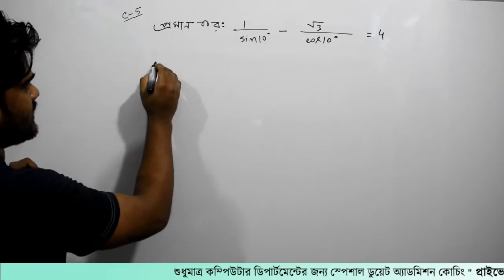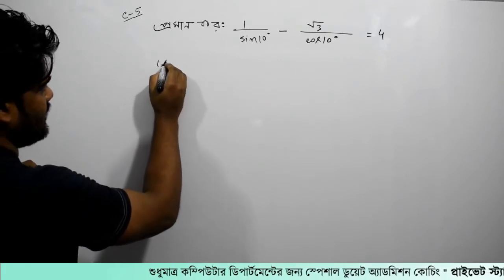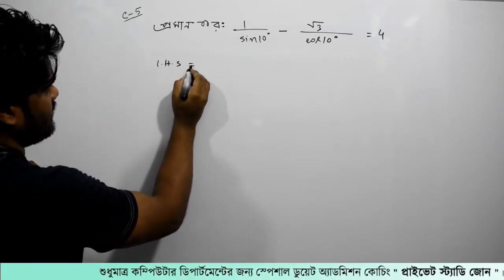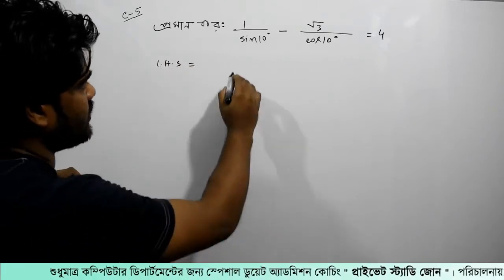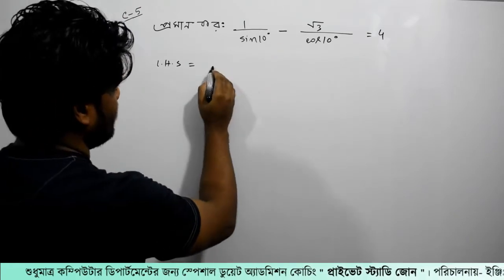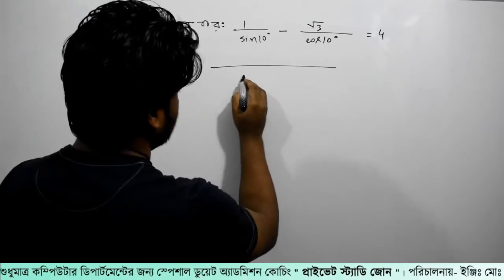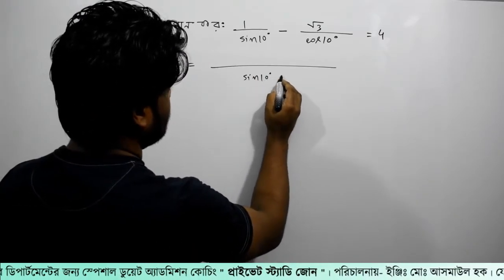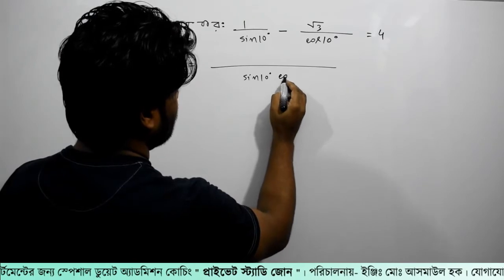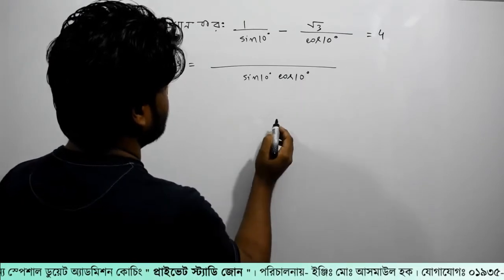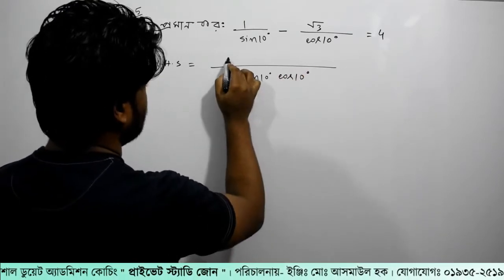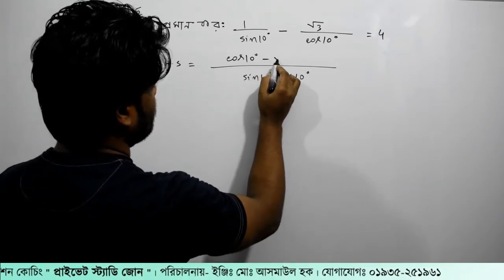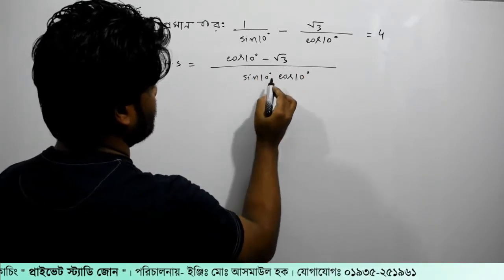Let's see the left side. Total sin 10 degree and cos 10 degree. We are going to do cos 10 degree minus root over 3.